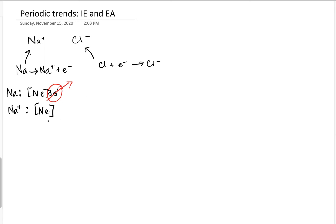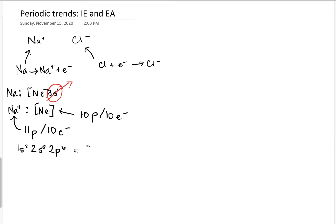If we think about the size of the neon atom versus the size of the sodium ion: neon has 10 protons and 10 electrons, while sodium ion has 11 protons and 10 electrons. They both have electrons in 1s2, 2s2, 2p6 — the full neon electron configuration. But the difference is that neon has one fewer proton, so what does that do to the size?